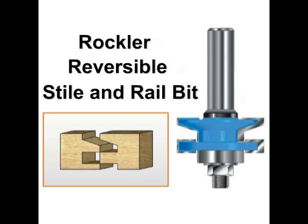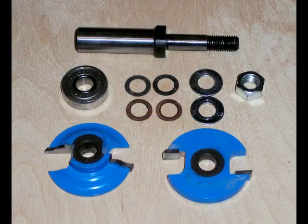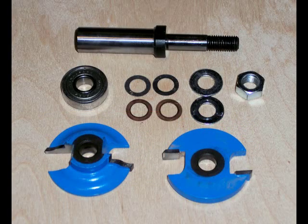The reversible style and rail bit allows you to make professional style and rail doors with one economical cutter. The included shims allow for fine tuning of the joint.